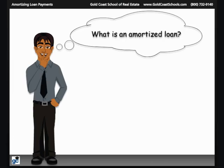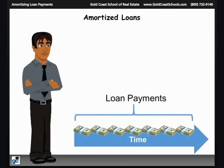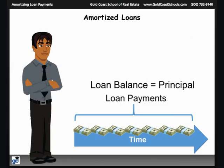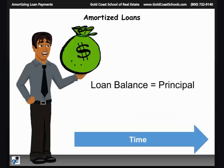You may be thinking: what is an amortized loan anyway? Very simply put, an amortized loan is a loan that is paid off over a period of time through scheduled loan payments. A typical mortgage loan is amortized over 15 to 30 years with monthly payments that are always the same amount. The amount that is owed is the loan balance and is referred to as the principal. The principal at the start of the loan is the total amount that was borrowed.